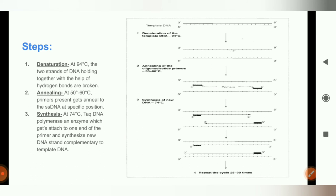In short, there are three steps in PCR: denaturation, annealing, and synthesis. Denaturation takes place at 94 degrees Celsius, annealing at 50 to 60 degrees Celsius, and synthesis or extension at 74 degrees Celsius. In further video lectures we are going to discuss these in more detail. This video was just an overview of cloning with and without the help of cells. Thank you for watching.